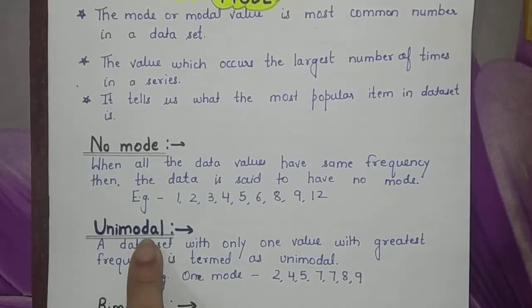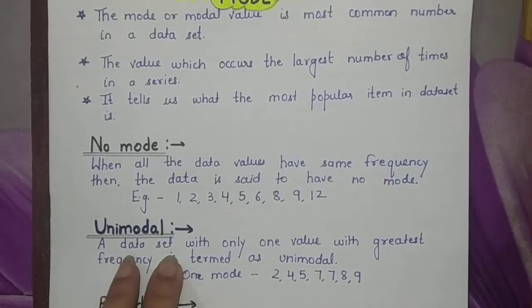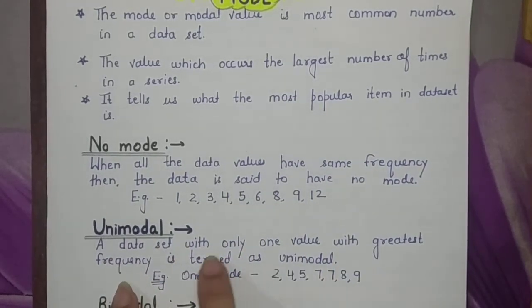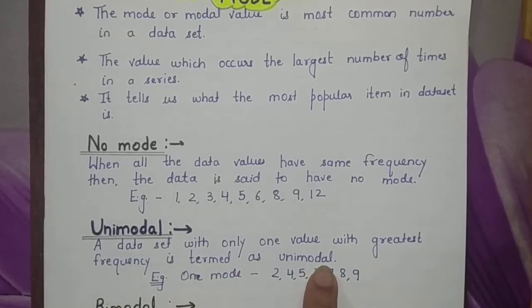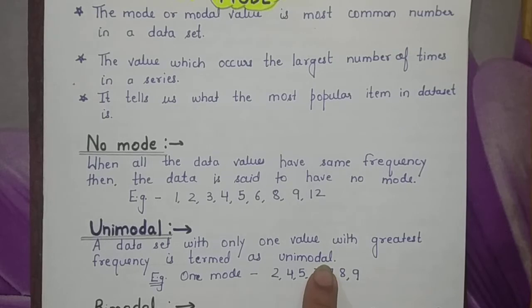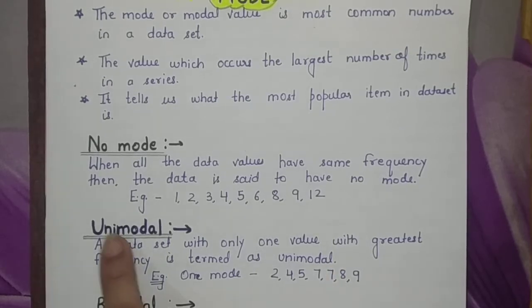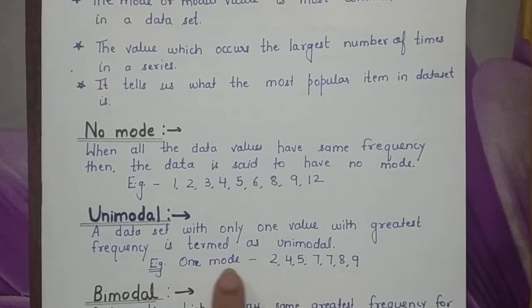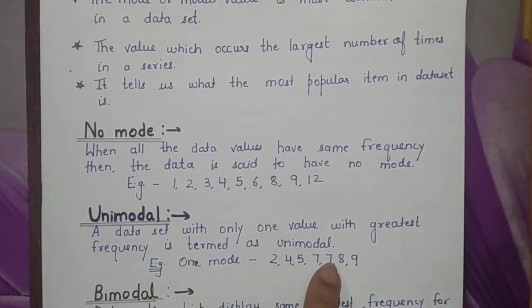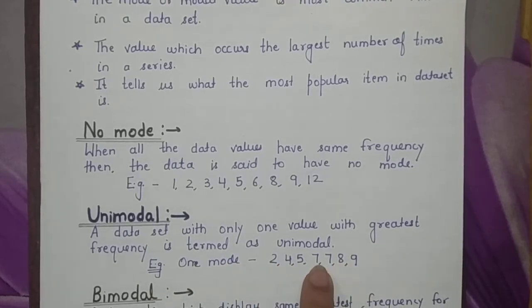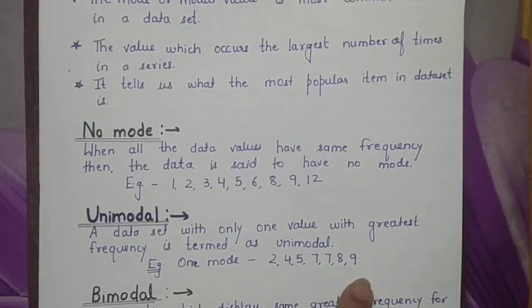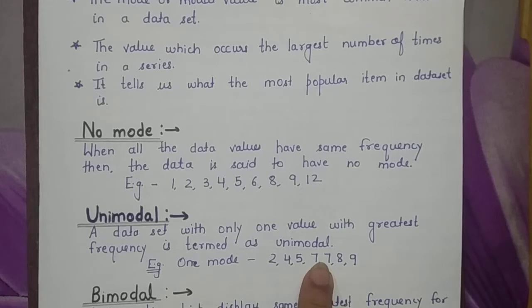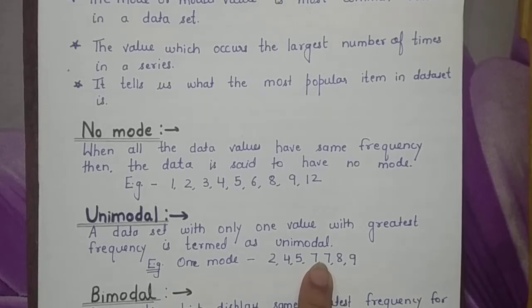The second situation is unimodal. A data set with only one value with the greatest frequency is termed as unimodal. For example: 2, 4, 5, 7, 7, 8, 9. In this data set, seven occurs two times and no other number repeats, so seven is the most popular item and the only mode.